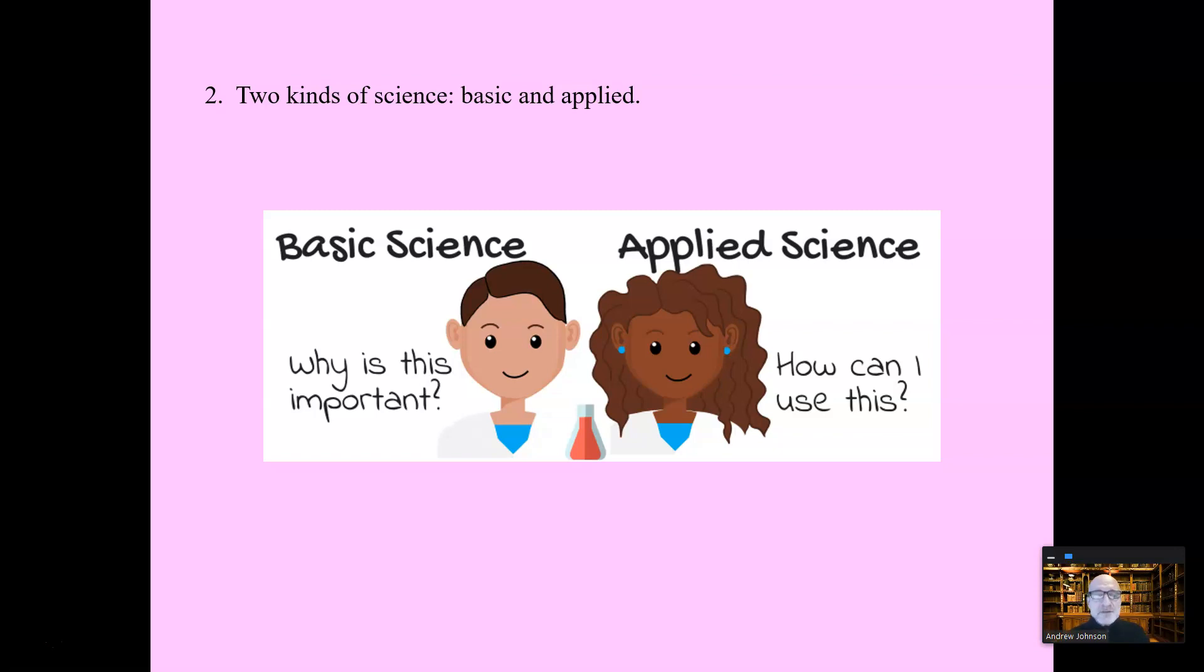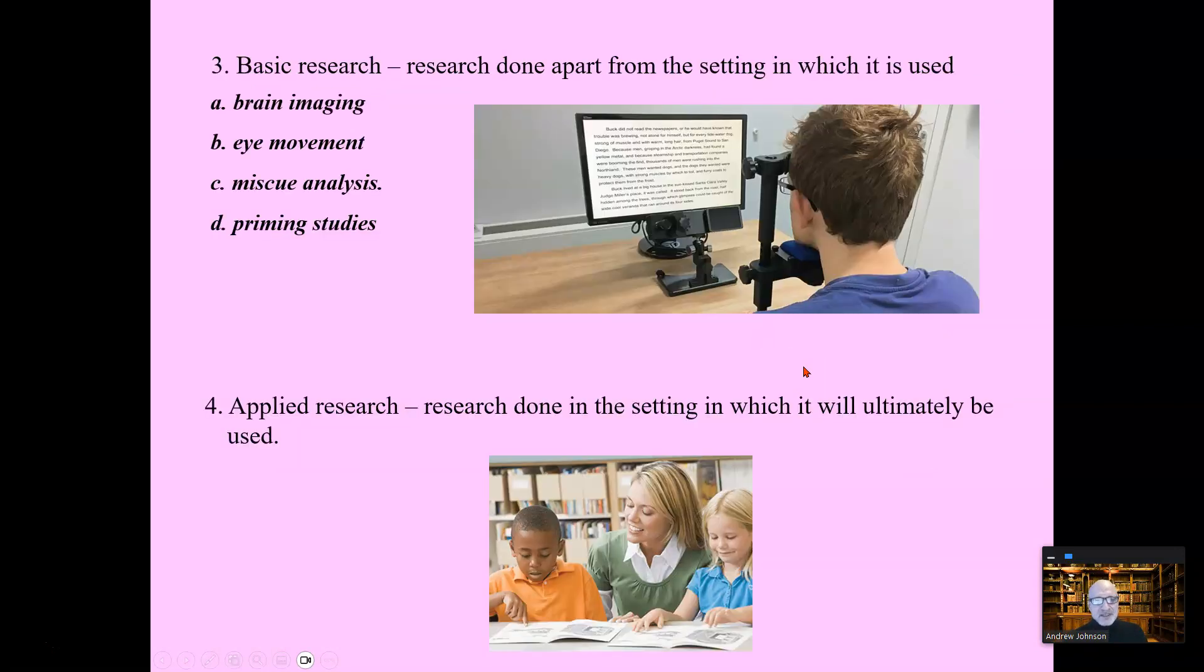Dr. Shanahan did a nice job of explaining this. Basic science is the research that's done apart from the classroom, used to create understanding, used to create data that's used to design theories. And a theory is a way to explain a set of facts and understand phenomena. Theories are incredibly important, but these are all types of basic research, not done in a classroom.